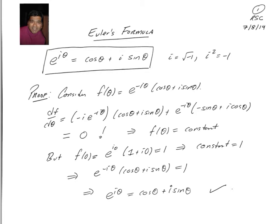Hi class. Welcome to this video on Euler's formula. Euler's formula is e to the i theta equals cosine theta plus i sine theta, where i is the square root of minus 1, i squared is minus 1. It's a complex number. This formula is probably known to you, but it's very important in our work in mathematical physics. I want to make sure that you understand this formula and its consequences. So first, let's see if we can actually prove that e to the i theta is cosine theta plus i sine theta.